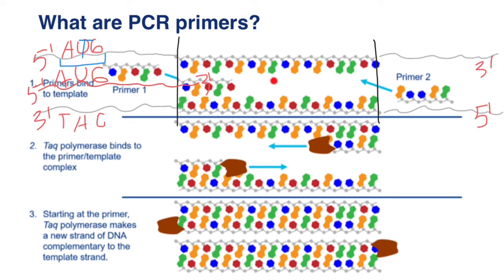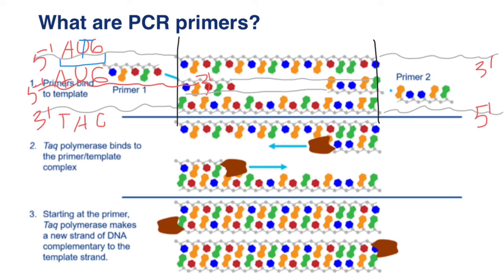In a PCR reaction, we do not produce messenger RNA. Nevertheless, the primer that goes in the same direction as messenger RNA we call the forward primer, and the other the reverse primer. But you may ask: what if our fragment of the DNA is not going to be part of a gene? Let's say you just find a certain fragment of the DNA which is outside of the gene — then which primer is going to be forward and which one is going to be reverse? In this case, there is no rule. You can call any primer you want forward or reverse; it's just up to you.